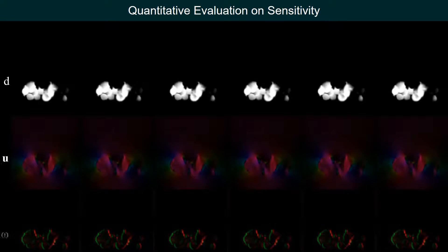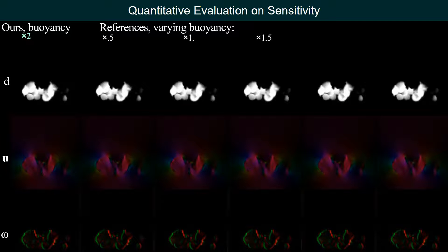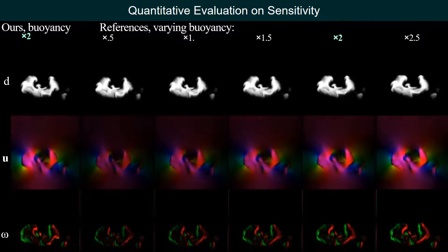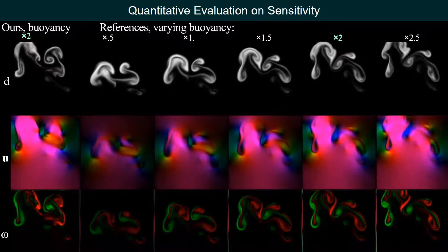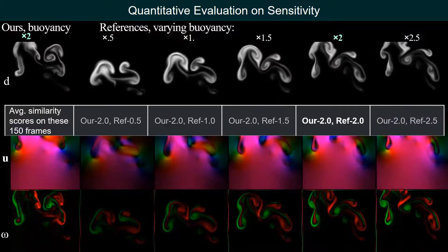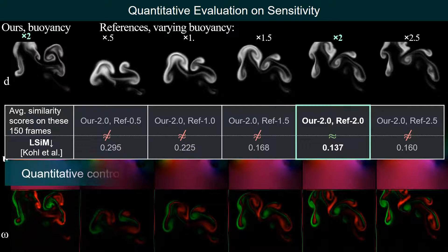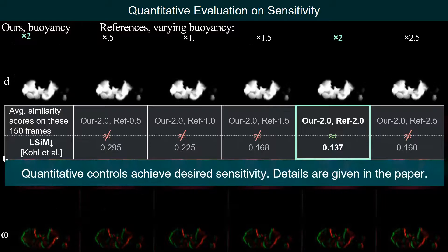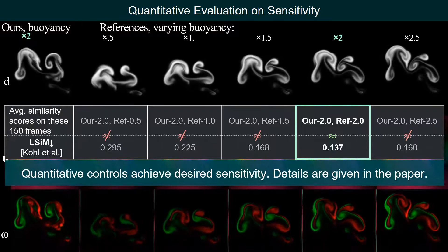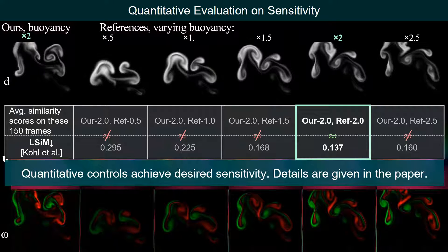We further evaluate quantitatively by comparing to a series of references with varying conditions. Measuring the average similarity scores on these 150 frames with the LSIM metric, our result is closest to the correct reference. Thus, we achieved the desired sensitivity. More details are given in the paper.